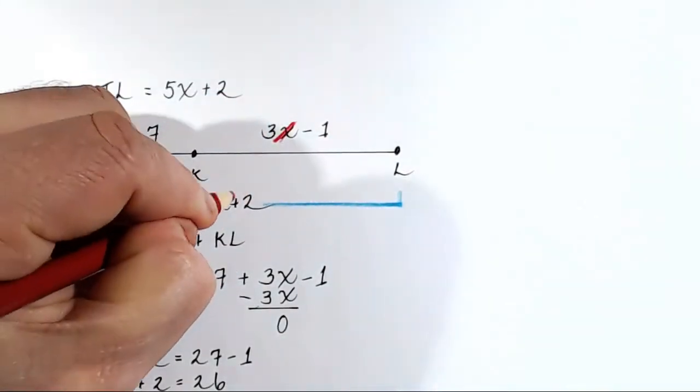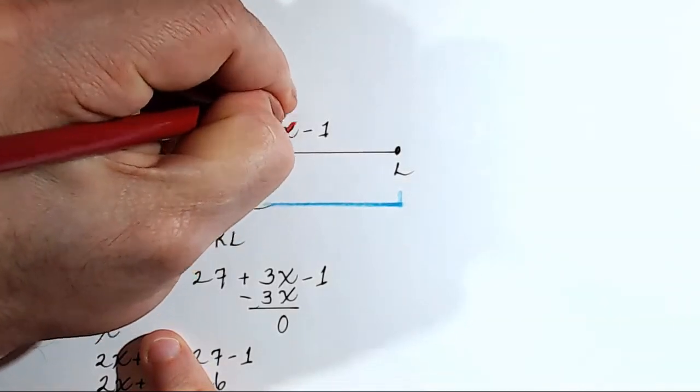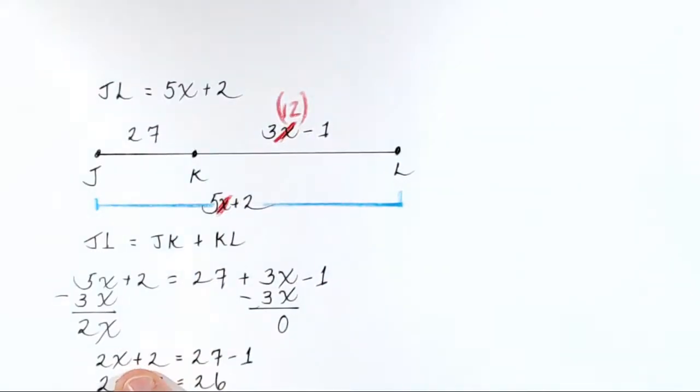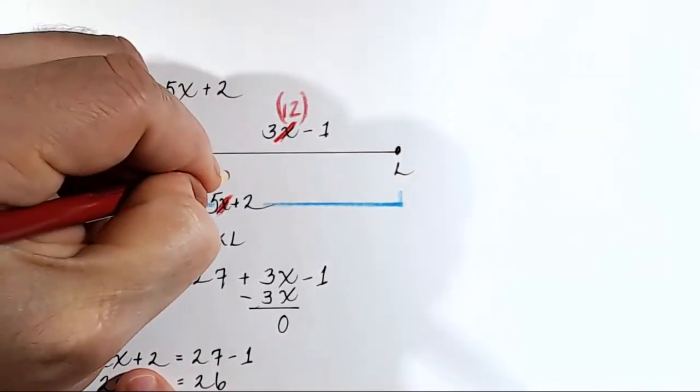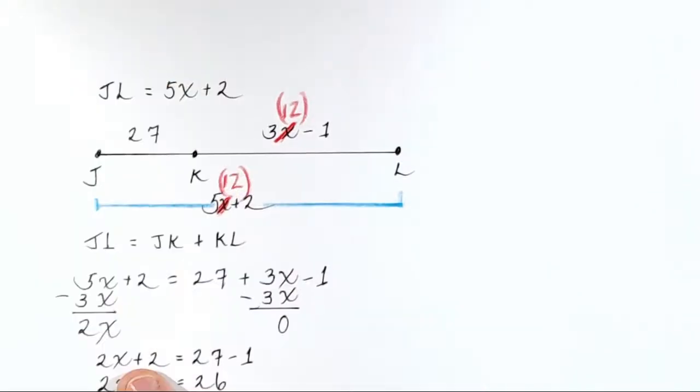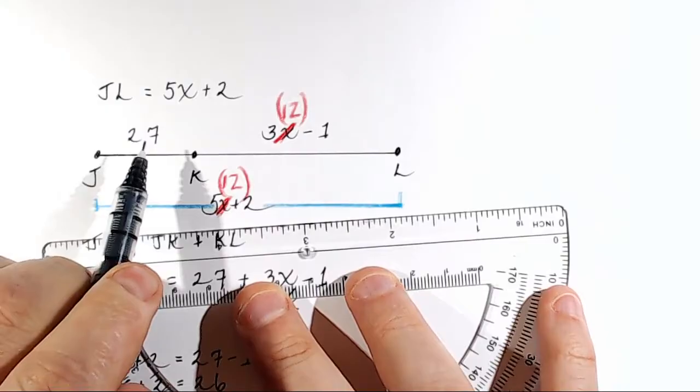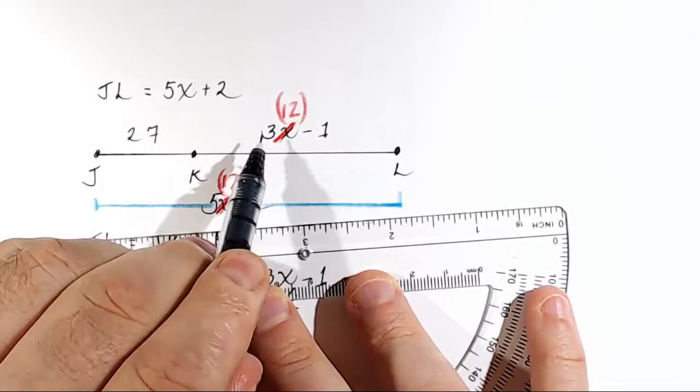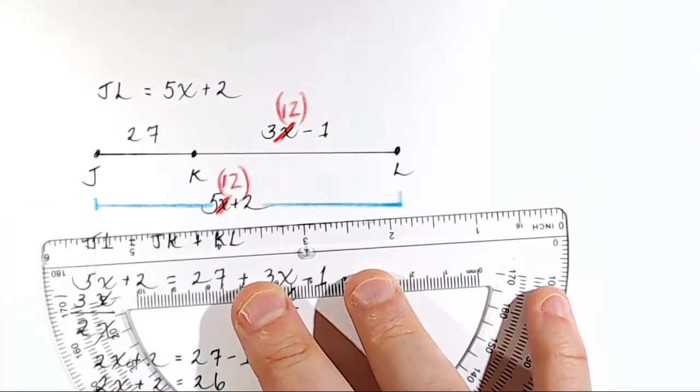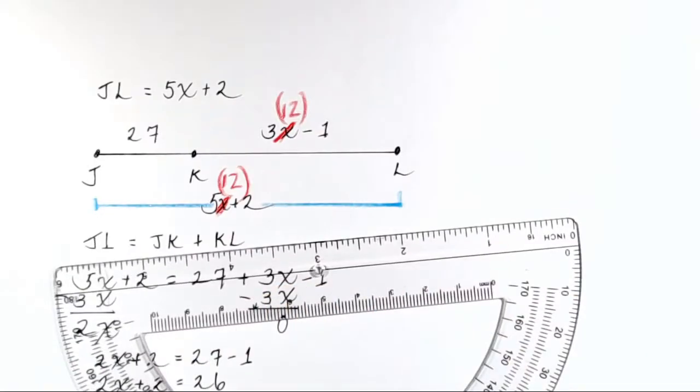So instead of X, I'm now going to put 12. So there's going to be a 12 here. It's going to be multiplied by 3. Down here, there's going to be a 5 times a 12. Okay? So let's work out these problems here. 27 doesn't change. It's still 27. Now let's check this. What is 3 times 12? Let's see. 3 times 12 is 36. 36 minus 1 is 35.